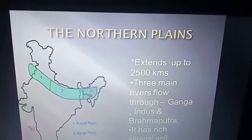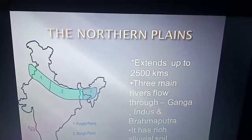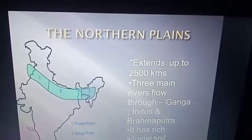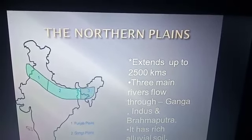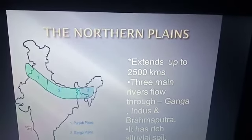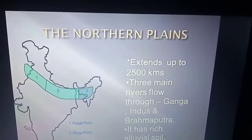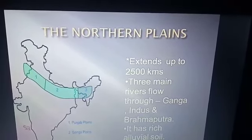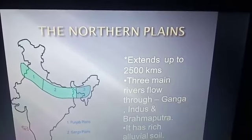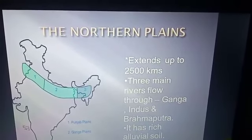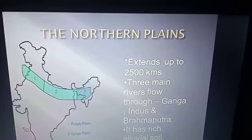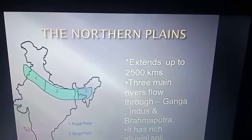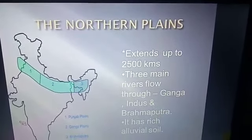The plain extends all along the foots of the mountains with a width varying from 120 to 300 kilometres. The longitudinal extent from the Indus Delta to the Ganga Delta is 3200 kilometres. The plain is narrowest in Assam, varying between 90 and 100 kilometres, and it is 160 kilometres wide near Rajmahal Hills and 280 kilometres near Allahabad.